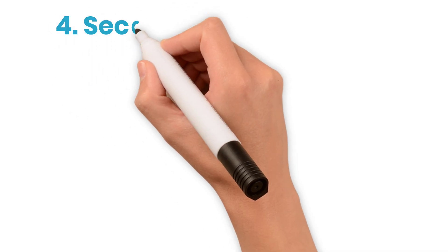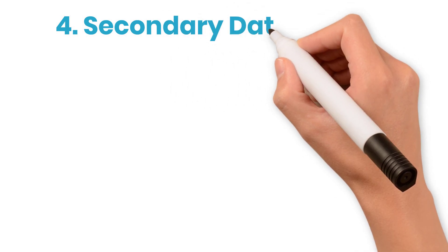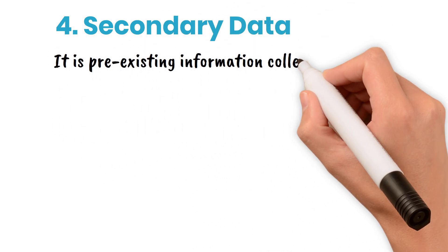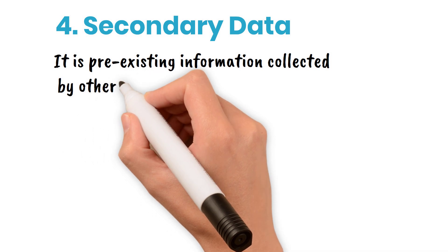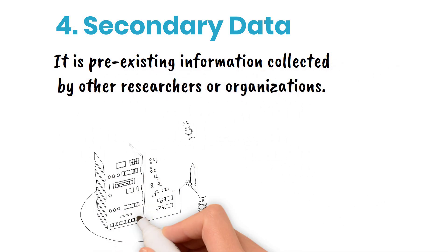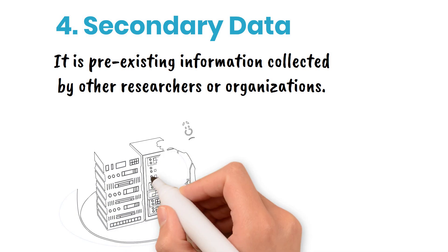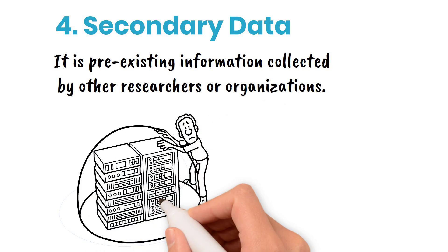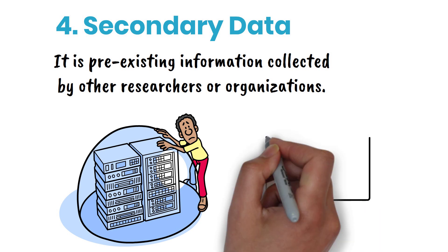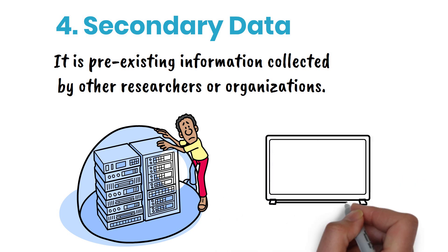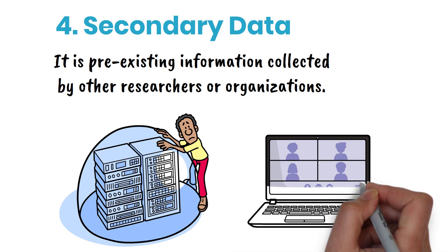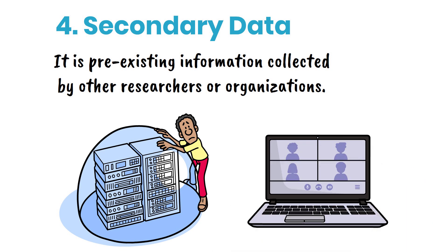Number four: secondary data. It is pre-existing information collected by other researchers or organizations. It's often more readily available and cost-effective, but may not perfectly align with the current research goals. For example, a policy analyst studying trends in educational achievement might use standardized test scores from government databases and published academic performance reports.